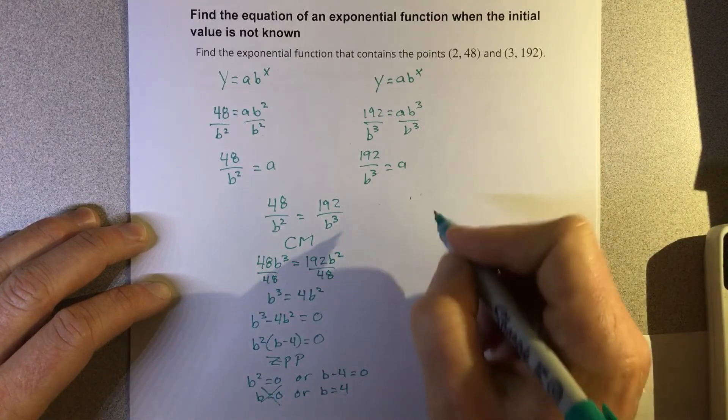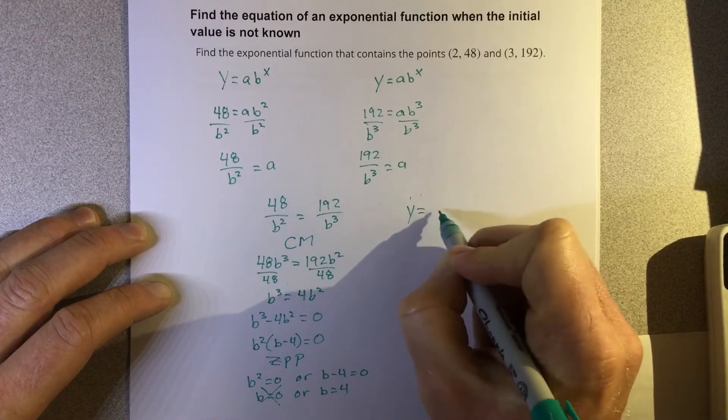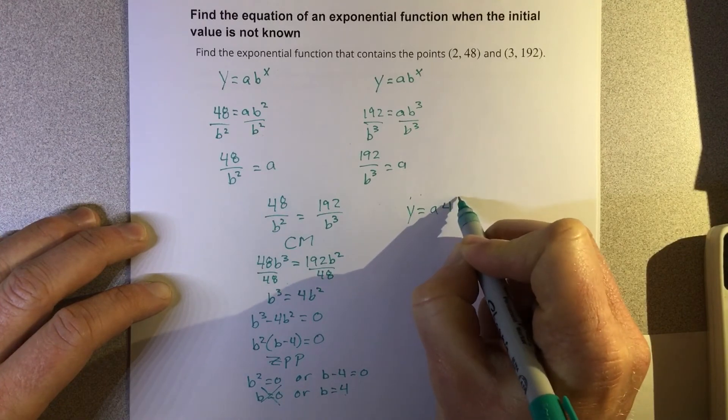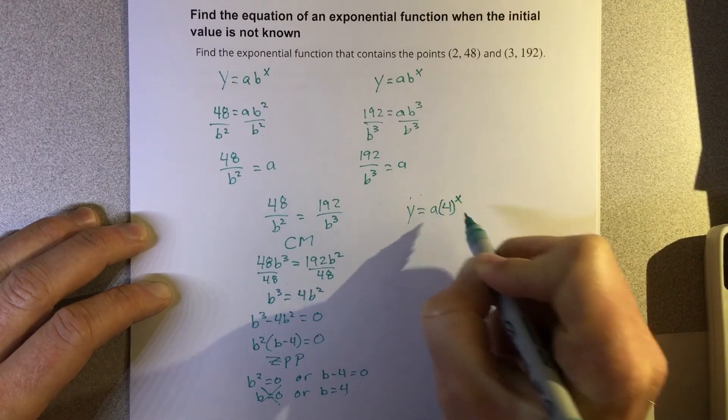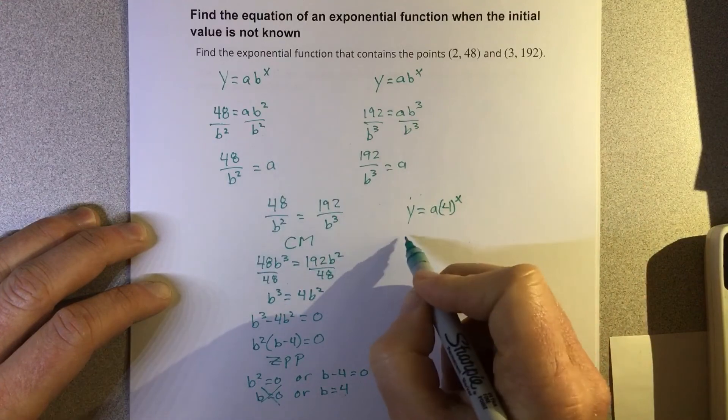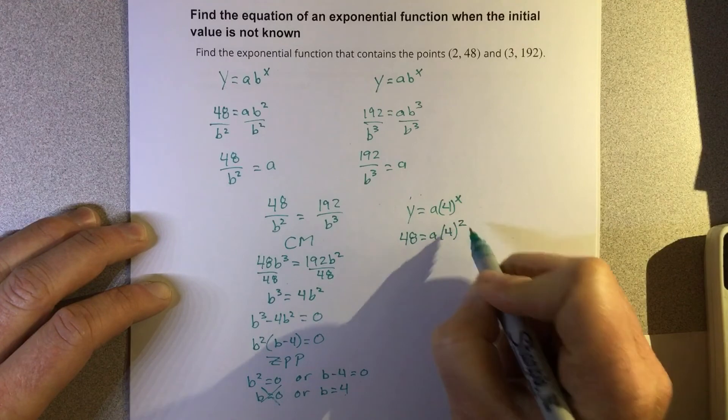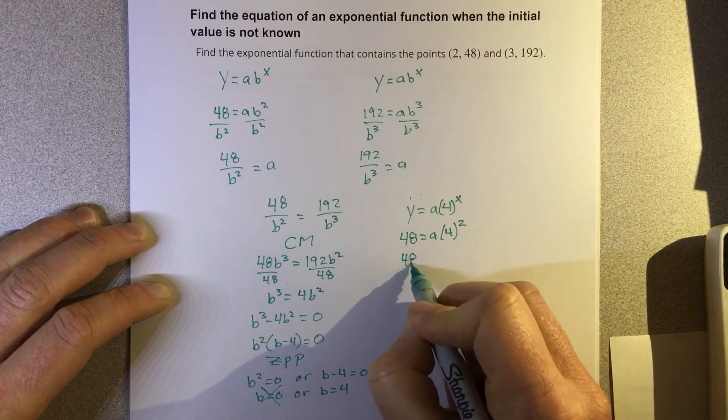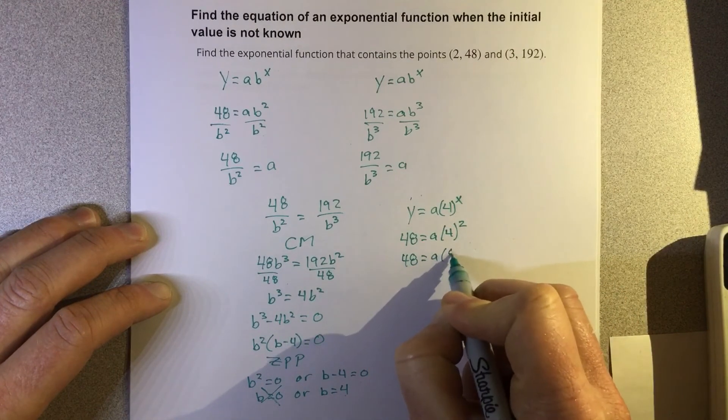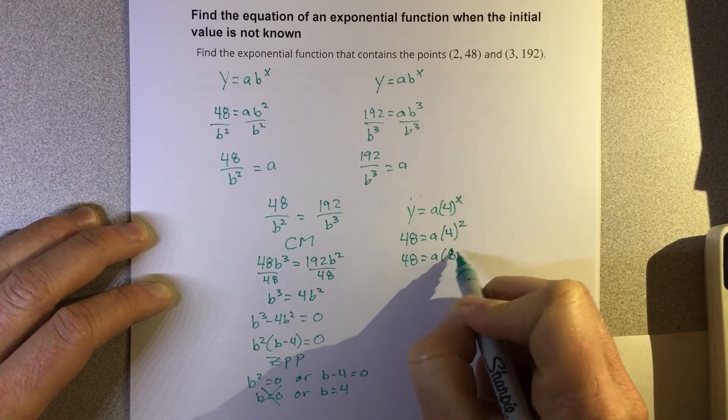We're going to use b equals 4. We're going to write y equals a times 4 to the x. We're going to plug in a coordinate. So I got 48 equals a times 4 to the second power. That's 48 equals a times 8—nope, times 16.